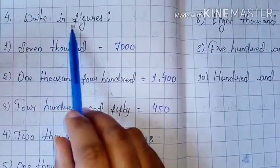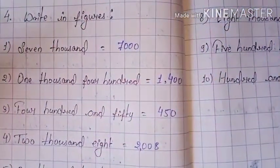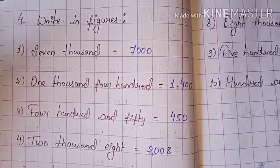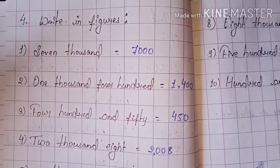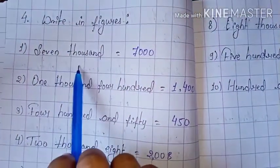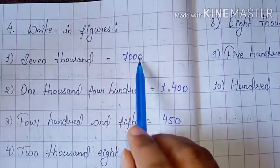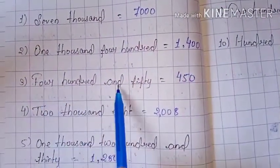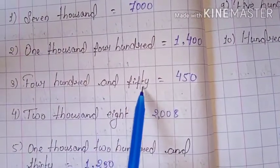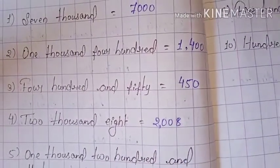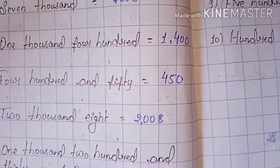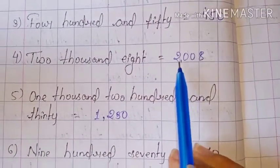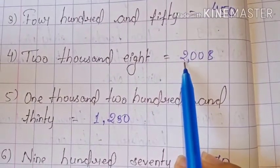Question number 4: Write in figure. In the previous question we wrote number names; now we write in digits. For example: seven thousand — we write 7,000. Next: eight thousand two hundred and eight — we write 8,208. The place value of 2 is in the thousands place.